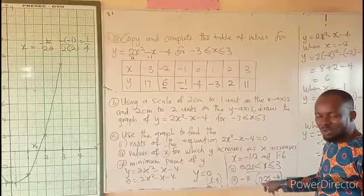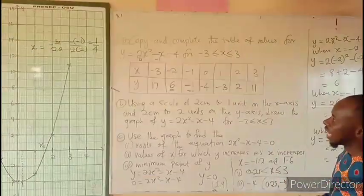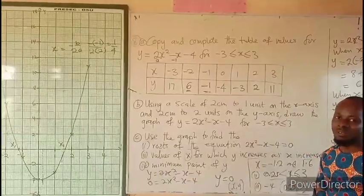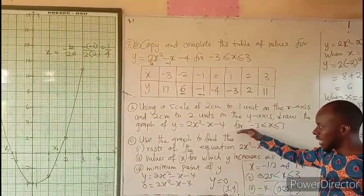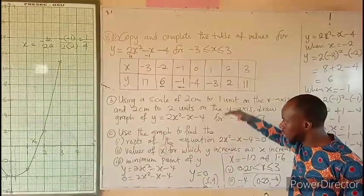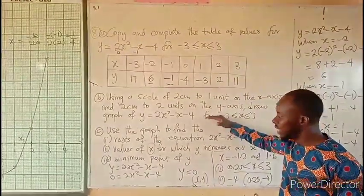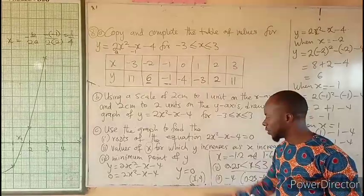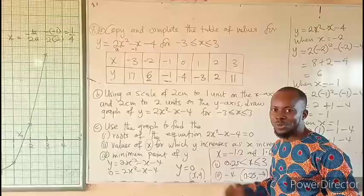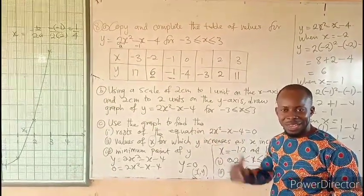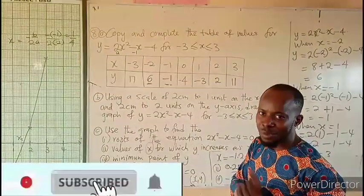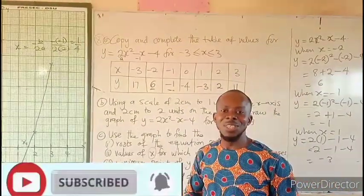I believe we've exhausted all the questions using the graph. Any question like this can follow the same approach: first finding the table values, constructing and drawing the graph, then using it to answer other questions. If this is clear, please share with your friends, subscribe, comment, and share. Bye.